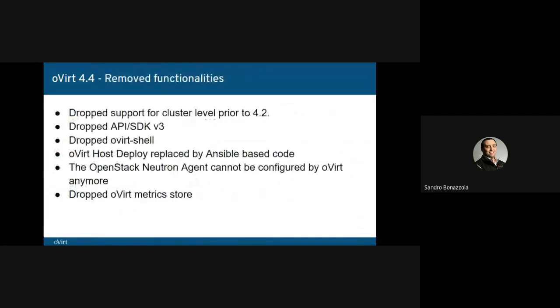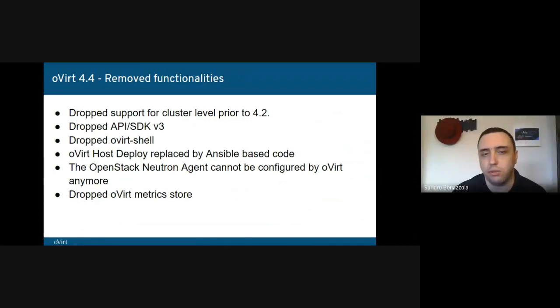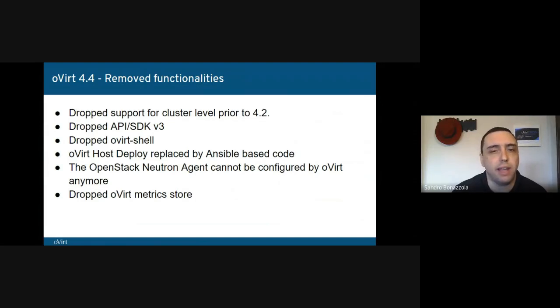With the massive refactoring of the code, functionalities that were deprecated in previous releases have been dropped. We dropped support for cluster levels prior to 4.2, meaning you'll need to ensure your data center is at least at cluster level 4.2 to be able to update. API and SDK version 3 support, deprecated in past versions, has also been dropped. If you have scripts developed for your own tasks, you need to update them to work with 4.4. SDK version 4 was already available in previous oVirt releases, so you can update your code before upgrading. oVirt shell has been dropped as well with the removal of API version 3.